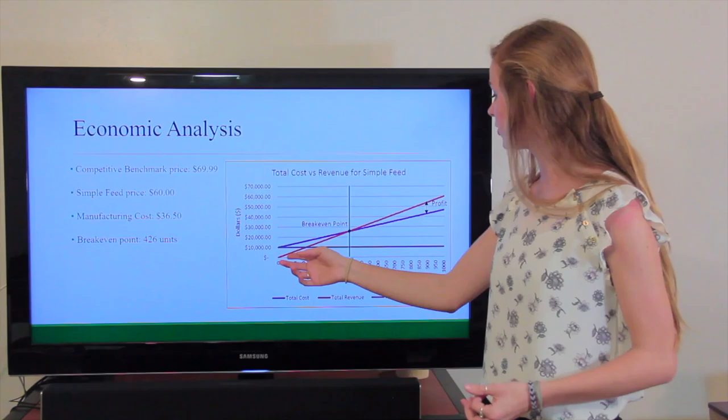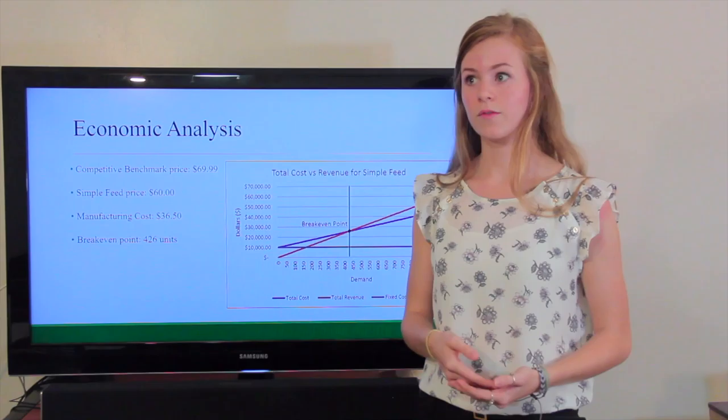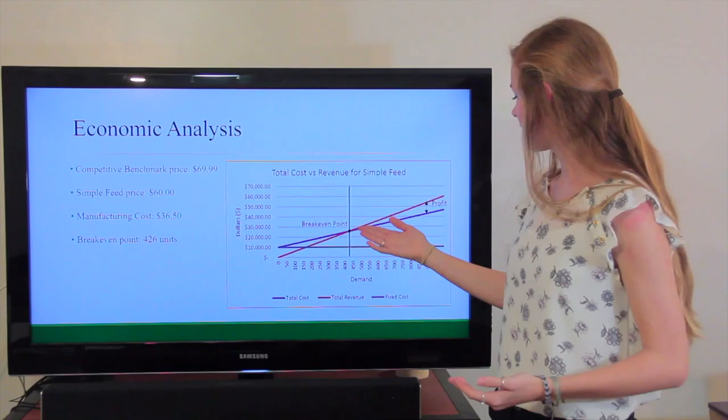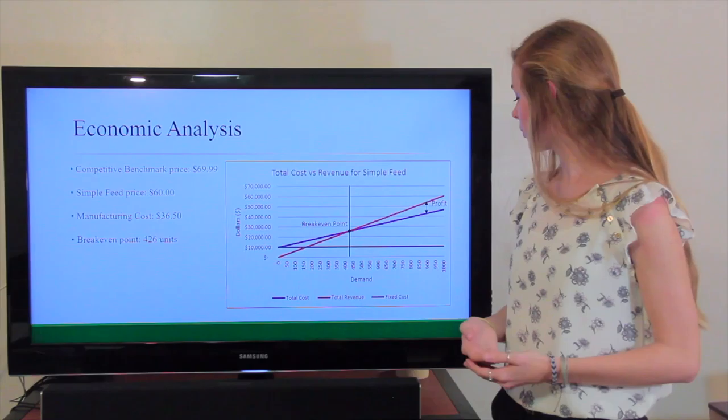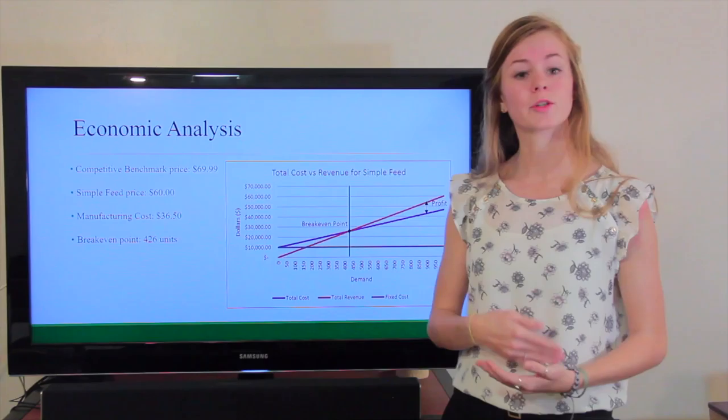Here we were able to make a graph that breaks down the fixed cost, which was $10,000. That is what VTEPS has told us that the fixed cost will be for this project. The total cost you can see is represented by the blue line, and the total revenue is represented by the orange line. Where these two lines intersect is our break-even point. What that means is that we need to be able to sell 426 units of our product to break even so that we are not under and not over. And then the area in between these two lines is where we would have our profit later on.